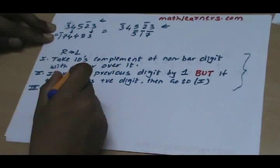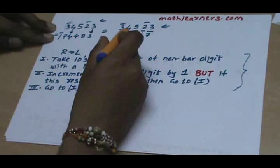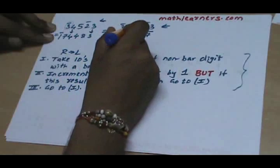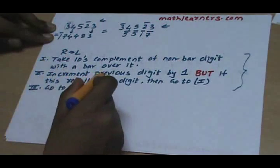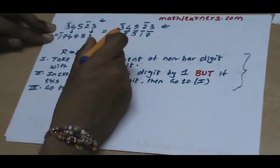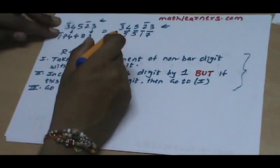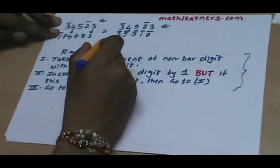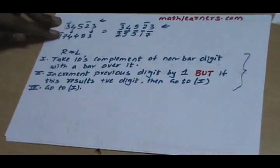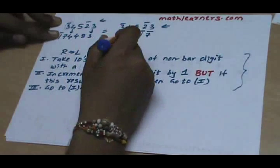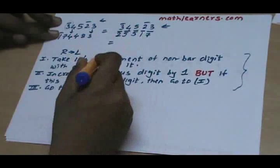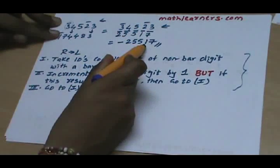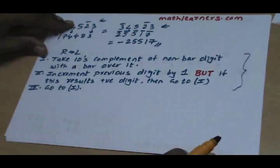Since incrementing 4 gave us 5 — a positive digit — without writing anything we go to step 1 again and take 10's complement of that 5, which comes as 5̄. Then go to step 2: increment the previous digit by 1, incrementing gives bar 2, which is not a positive digit, so we write it down as bar 2. As you can observe, all the digits are now win-column digits — this is a negative number and can be written as minus 2 5 5 5 1 7.